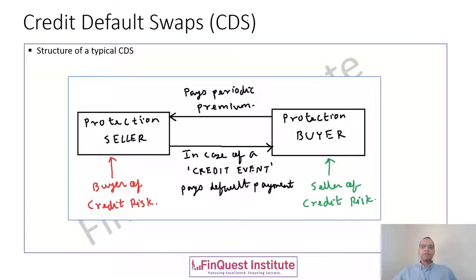Let's start with the very first credit derivative: a CDS, or credit default swap. Most of you must have heard about credit default swaps, or maybe read about it in newspapers. During the global financial crisis around 2007 and 2008, these were the products which became infamous, unfortunately.